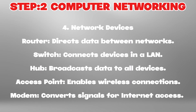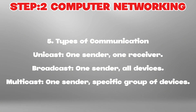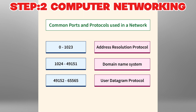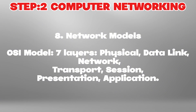You should also learn about routers, switches, hubs, access points, and modems, as well as communication types like unicast, broadcast, and multicast, and network protocols such as HTTP, TCP, FTP, SMTP, and DNS. There are more than 65,000 ports available, so you should know the commonly used ones. Learn about IP addresses — IPv4 and IPv6, public and private IPs — and the OSI model's seven layers: physical, data link, network, transport, session, presentation, and application.